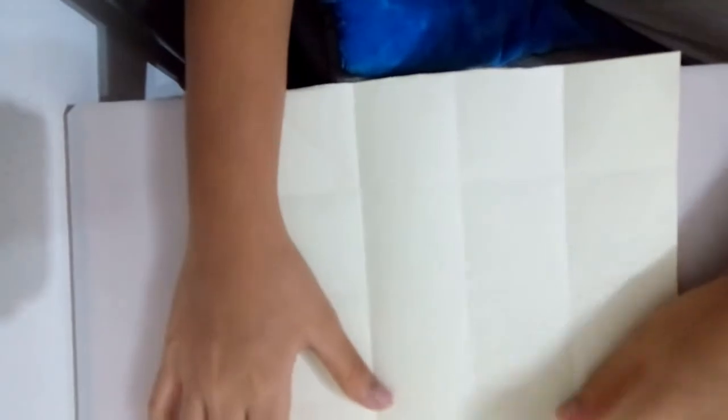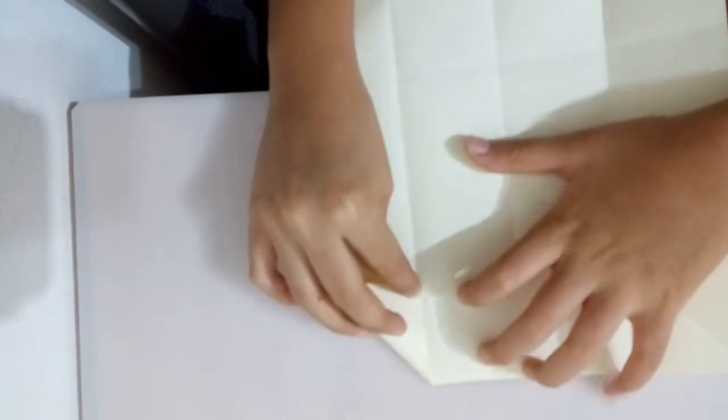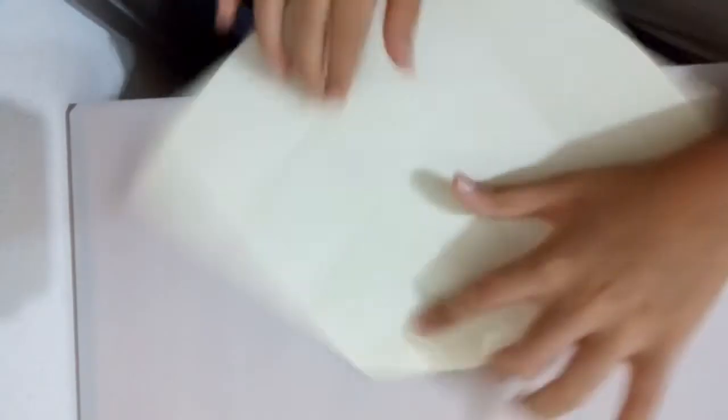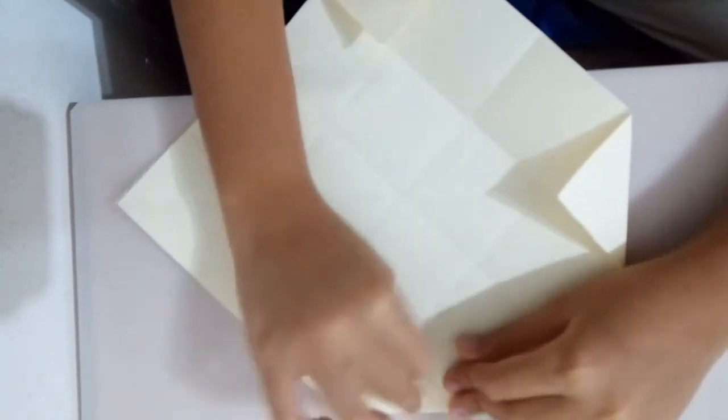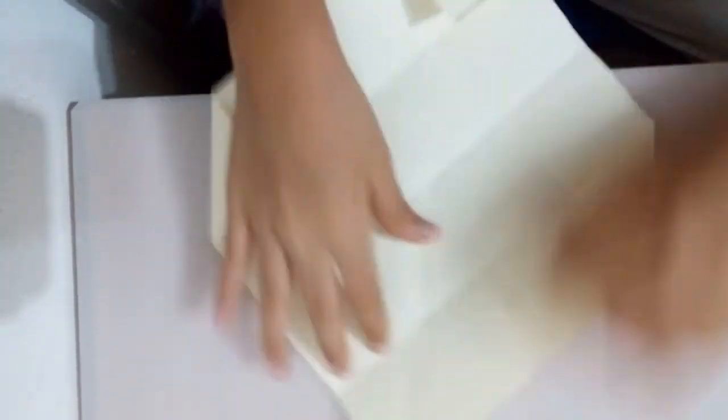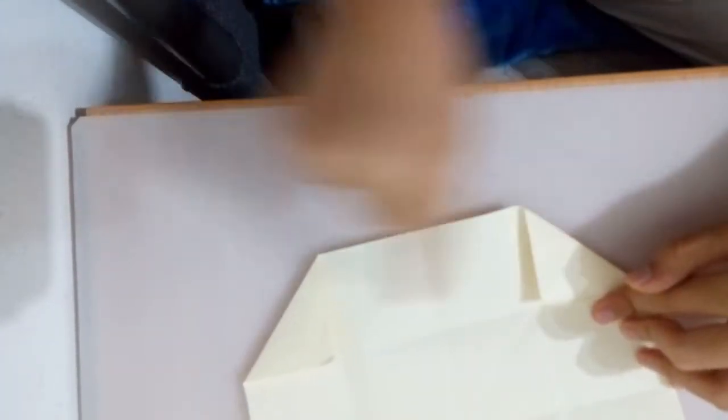As you can see, we have so many squares. Take the end apart and fold it like that. As you can see, we have folded all four sides.